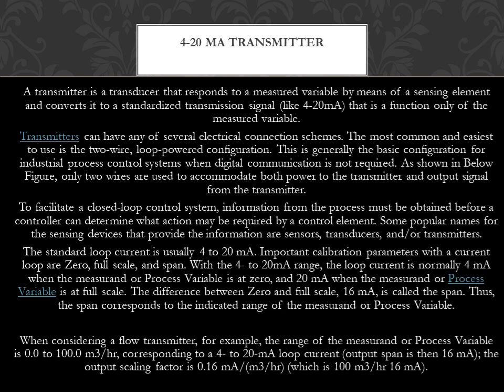The most common and easiest to use is the two-wire, loop-powered configuration. This is generally the basic configuration for industrial process control systems when digital communication is not required. Only two wires are used to accommodate both power to the transmitter and output signal from the transmitter. To facilitate a closed-loop control system, information from the process must be obtained before a controller can determine what action may be required by a control element. Some popular names for the sensing devices that provide this information are sensors, transducers, and/or transmitters.